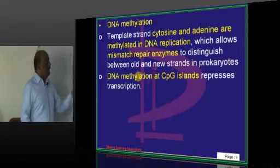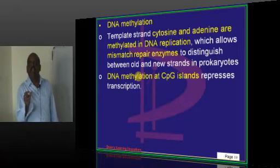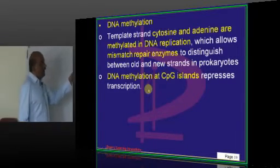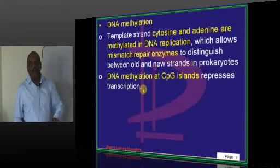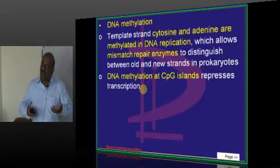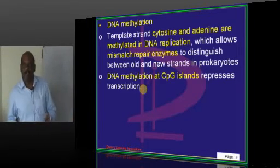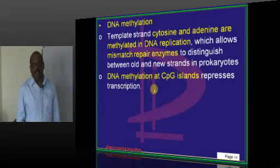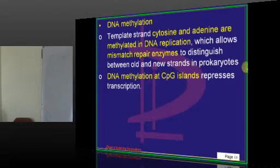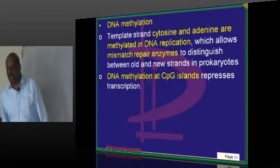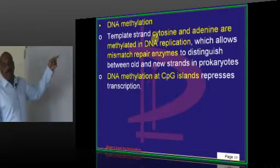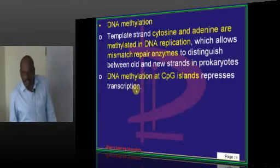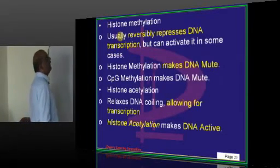There is another methylation that occurs in pockets of cytosine and guanine islands called CpG islands. In areas that have undergone this methylation, transcription becomes repressed. CpG methylation acts as a toggle mechanism — locking transcription off — and its purpose is to repress gene transcription.